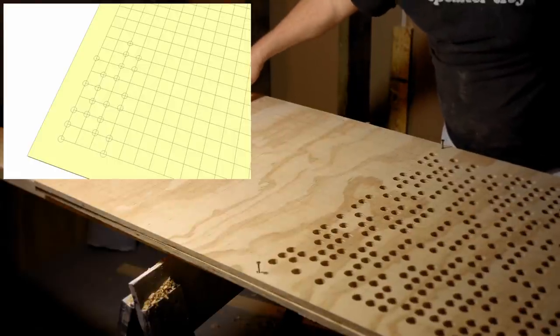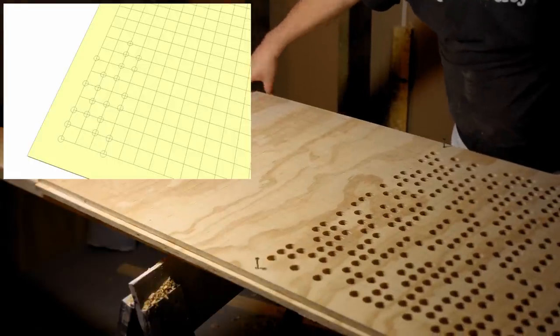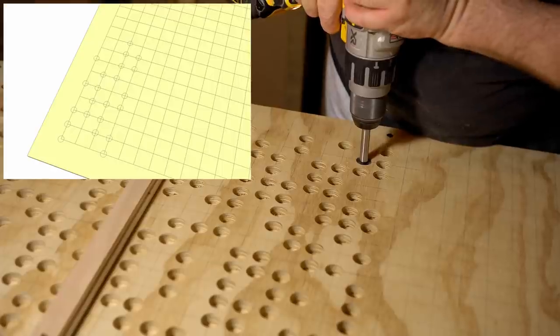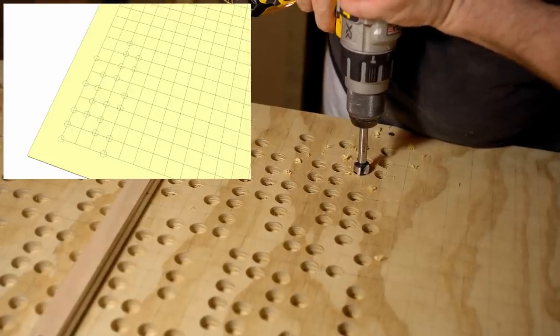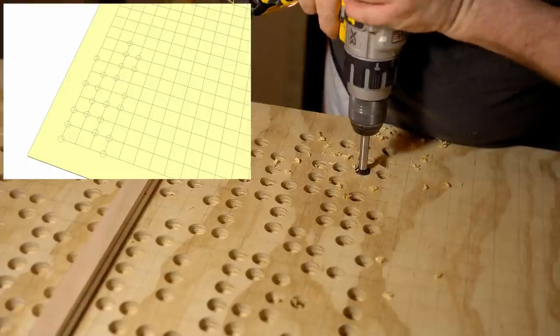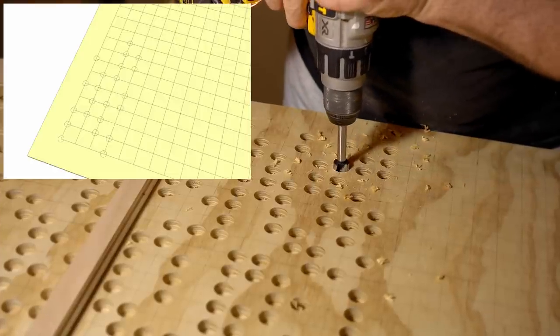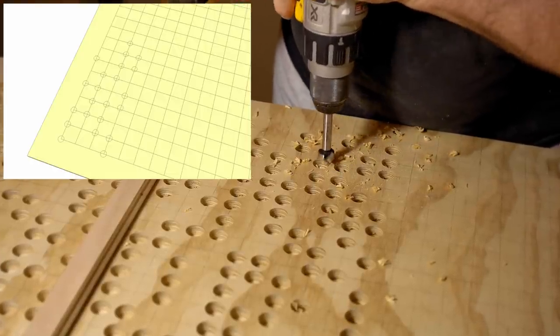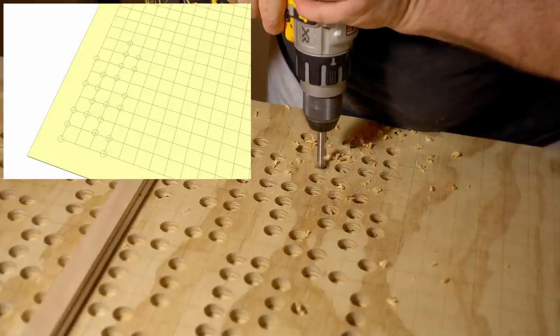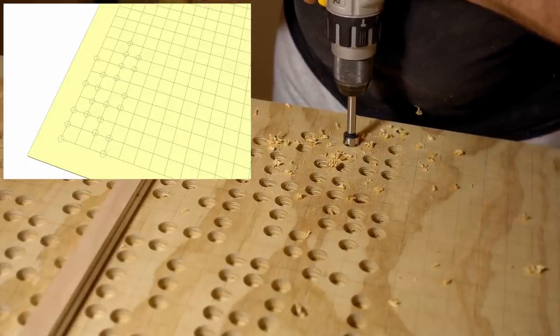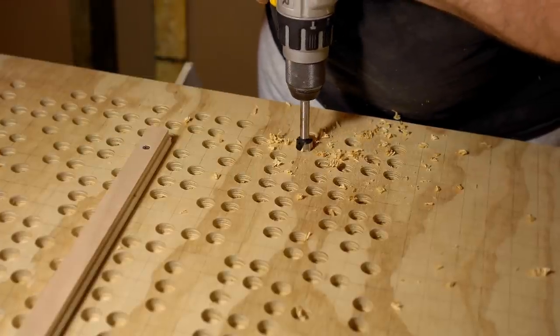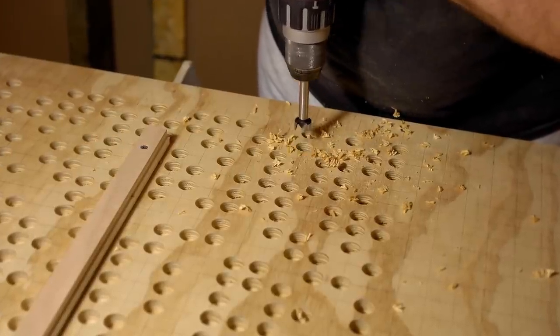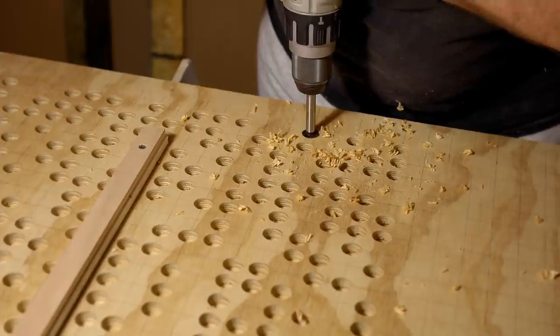Then after you have that grid laid out you mark where the holes are going to be and I think the easiest way to do that and the one that I use is just draw a circle around the cross point in the grid where you want a hole. And then the next step that I recommend is to drill a pilot hole with a 1⅛ inch bit all the way through this panel and then use this panel after you've drilled all of those 1⅛ inch holes as a template for laying out the other panels.